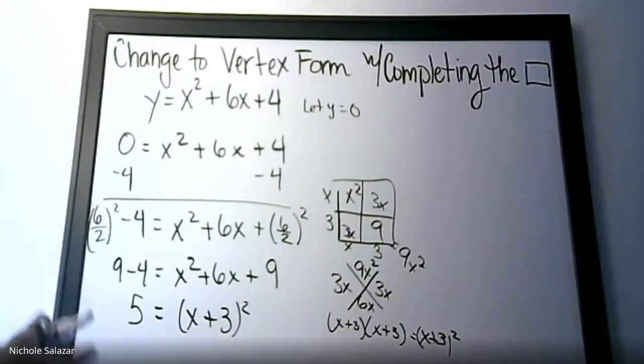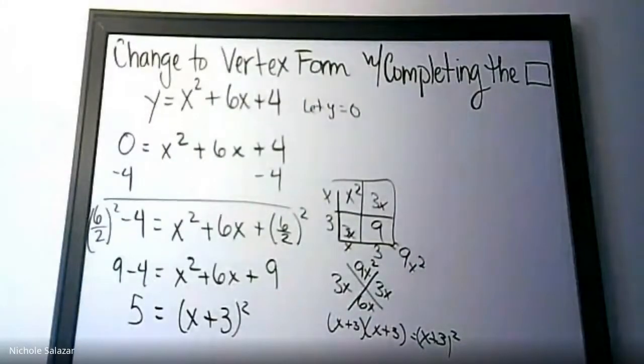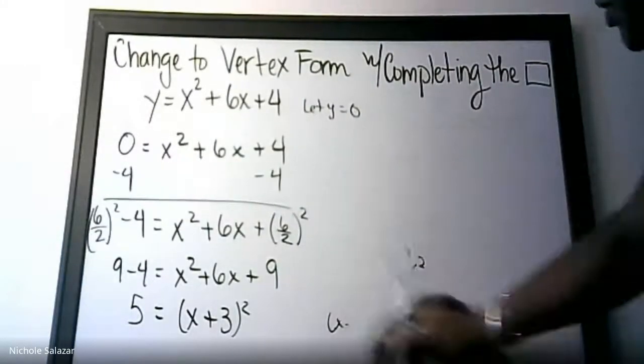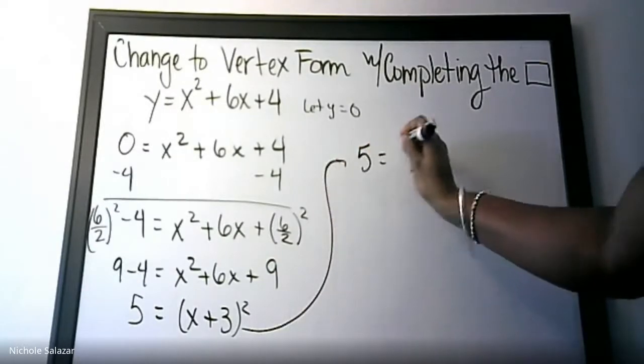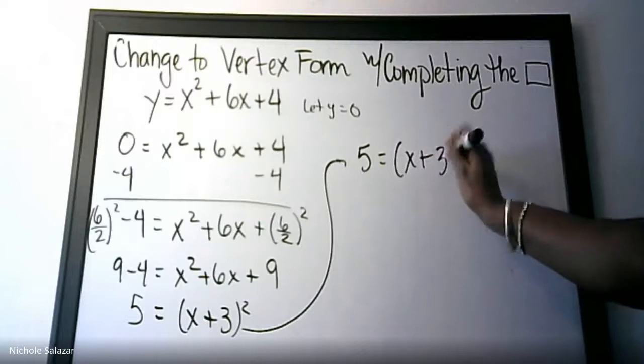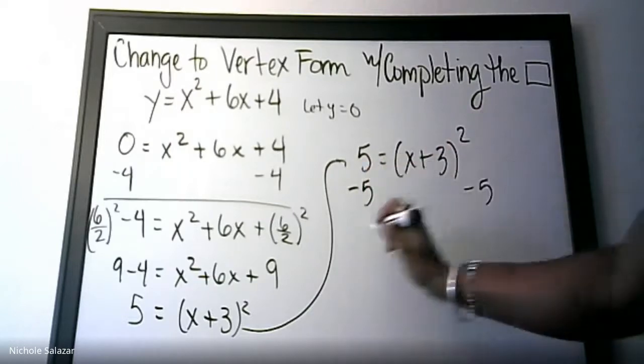That is all the math that it takes to get here. Now I'm going to erase that because we need to put this in vertex form and I need room. So from here I'm going to come up here. I'll rewrite it and I take out the 5 from both sides.